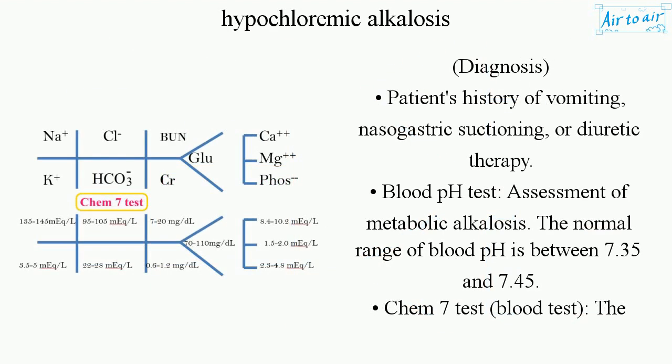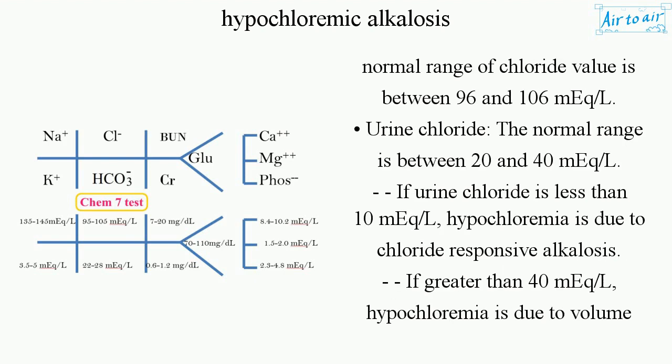Diagnosis involves the patient's history of vomiting, nasogastric suctioning, or diuretic therapy. A blood pH test assesses metabolic alkalosis; the normal range of blood pH is between 7.35 and 7.45. A Chem-7 blood test measures chloride, with a normal range of between 96 and 106 mEq/L.